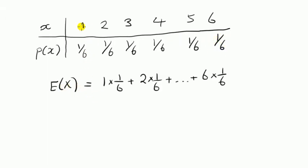So the formula says the outcome of the first one, that's 1 times 1 over 6, plus the second outcome, 2 times its associated probability, 1 over 6, and so on all the way to the end. Last outcome, 6 times its probability of occurring, that's 1 over 6.